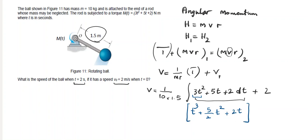The integration is from 0 to 2. Substituting t equal to 2 gives 8 plus 10 plus 4, which equals 22. Substituting t equal to 0 gives 0. Plugging all values in, the velocity works out to 3.46 meters per second.